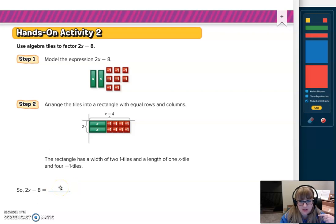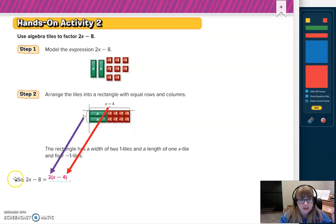See if you can pause the video and figure that out first before I show you the answer. All right, take a look. Look, the dimensions of that rectangle are 2 and x minus 4, so factored, it's 2 times x minus 4. Notice those parentheses. It's not just 2 times x. It's 2 times x minus 4. It's that whole side length, so that's why we need to include it in parentheses.